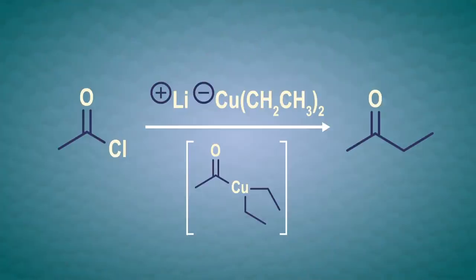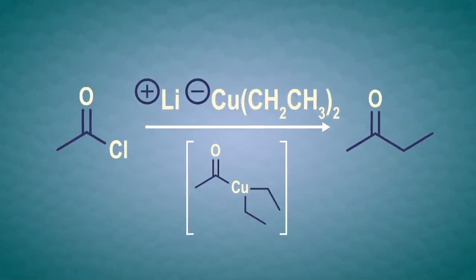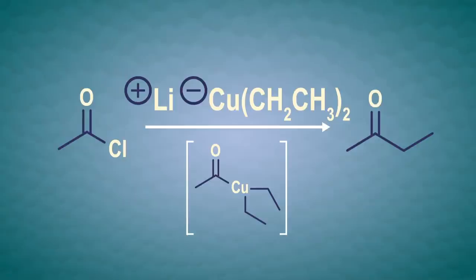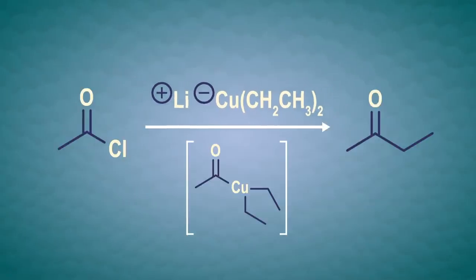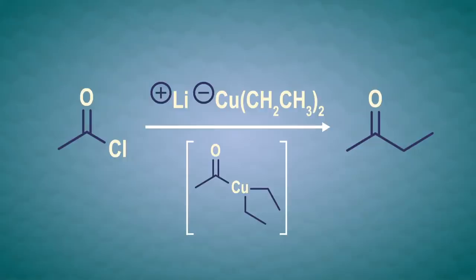However, we can get to that elusive ketone if we mix an acid chloride with an organocuprate reagent known as a Gilman reagent, as we saw in episode 28. Organocuprates are less reactive compared to Grignards, so organocuprates don't usually react with the carbonyl of a ketone once it's formed. So there will be enough time and enough ketone hanging around to isolate it.